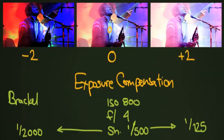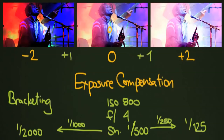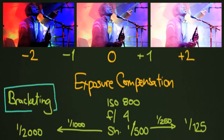Bracketing is spelled with just one T, by the way. You could also do it with one stop — on your way to 1/2000, you could take one at 1/1000 and one at 1/250, giving you a +1 and a -1. That is bracketing done manually — you just move your dial from one setting to the other. Another option is to set up automatic bracketing on your camera, where every time you press the shutter it takes two, three, or four different photographs automatically.